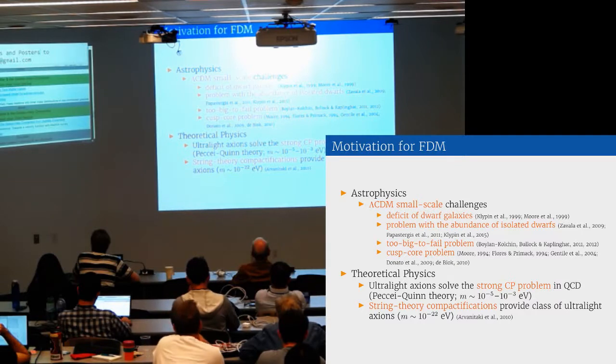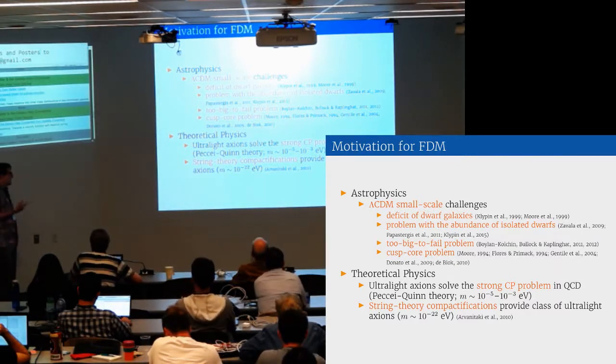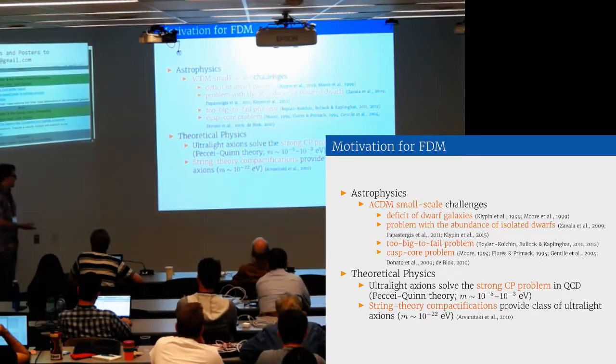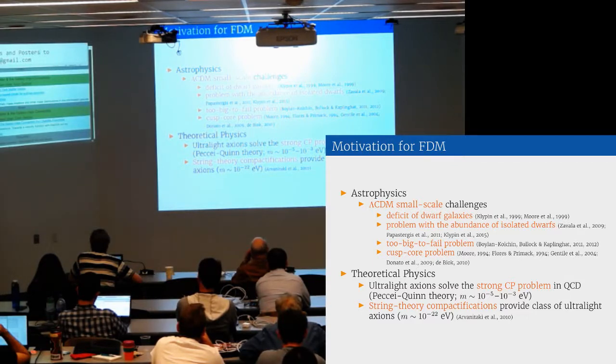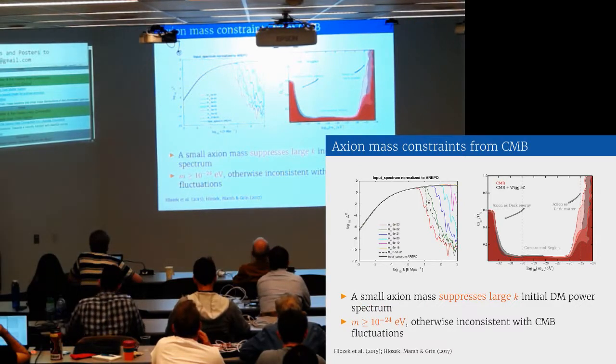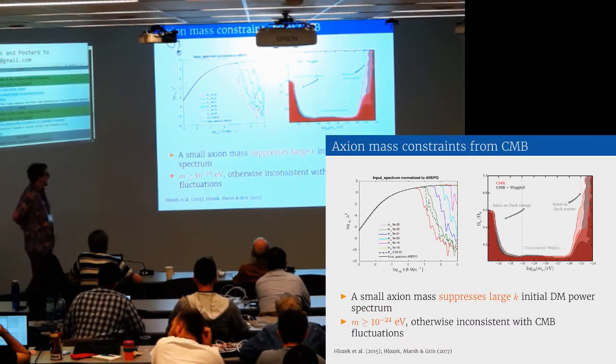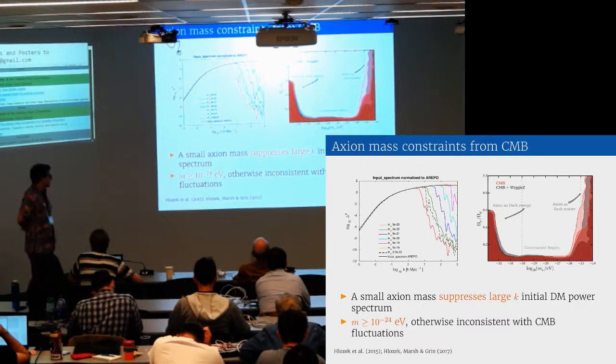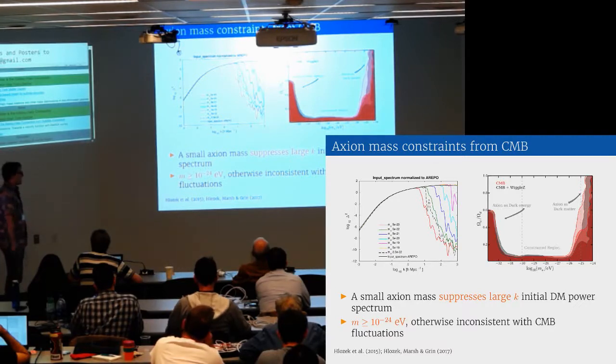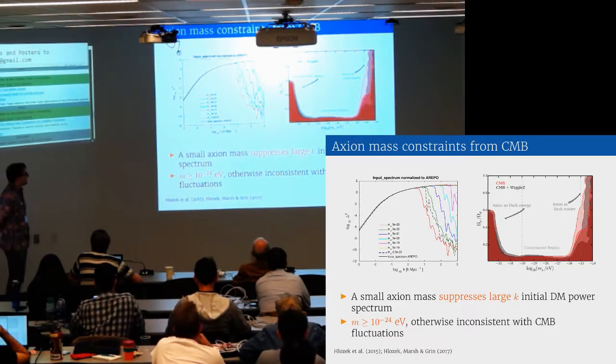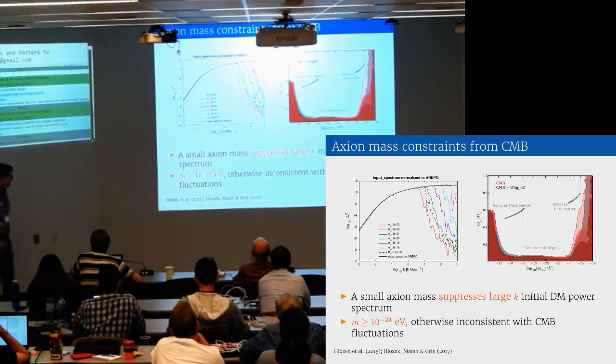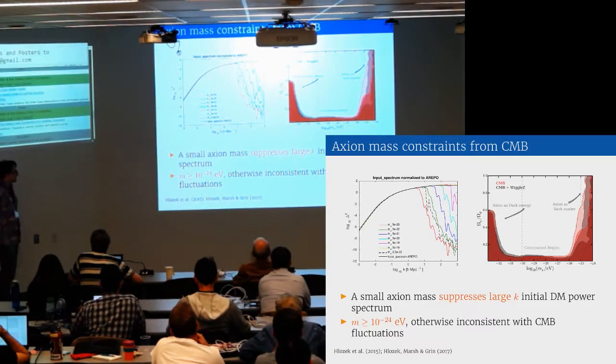There's also motivation from theoretical physics. These ultralight axions are predicted to solve the strong CP problem. In QCD the axion is a natural candidate for fuzzy dark matter. They also arise in string theory compactification theories. You can get a whole class of axions with different particle masses. There's constraints from the cosmic microwave background on the particle mass. Basically you cannot have the mass to be too small, otherwise you suppress large scale power in the initial dark matter power spectrum of the early universe, and you're inconsistent with the CMB.